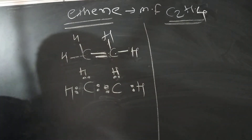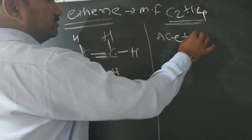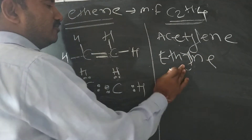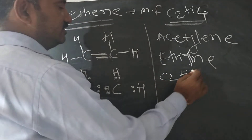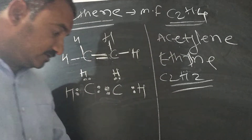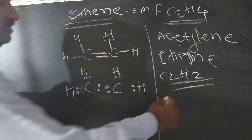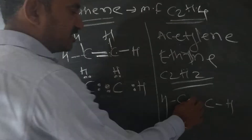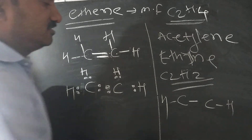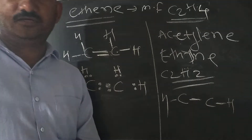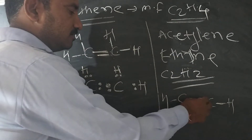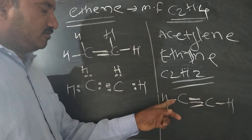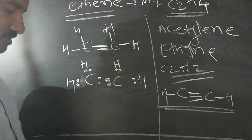Now consider the next example: acetylene, also called ethyne. The molecular formula of ethyne is C2H2. To write the structural formula of ethyne, first write the two carbons. There are two hydrogens, so one hydrogen here and one hydrogen here. Each carbon has a single bond to hydrogen — that is one bond per side. Counting bonds between carbons: carbon needs four bonds but only has two, so write three bonds — a triple bond. One, two, three and the fourth bond is the hydrogen. This is the structural formula of ethyne, also called acetylene.